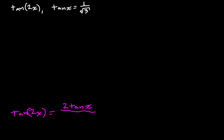Over, so two tangent of x over one minus tangent squared of x. All right, then.